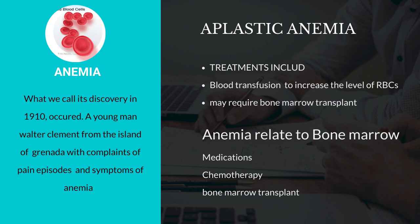Number 5, anemia related to bone marrow. The doctor treats this type of anemia by 3 ways. Number 1, medications. If that fails, Number 2, the doctor uses chemotherapy. If that again fails, Number 3, the doctor suggests a bone marrow transplant.